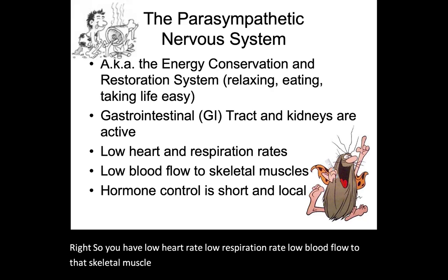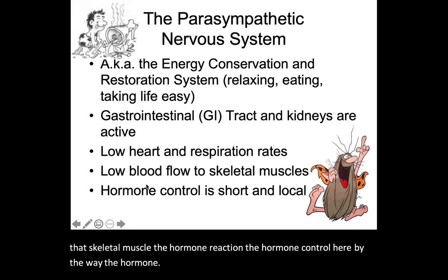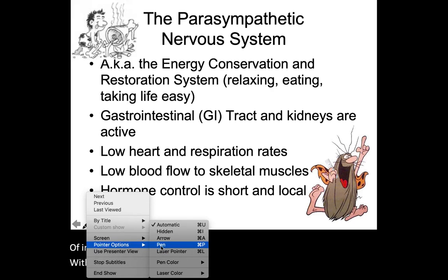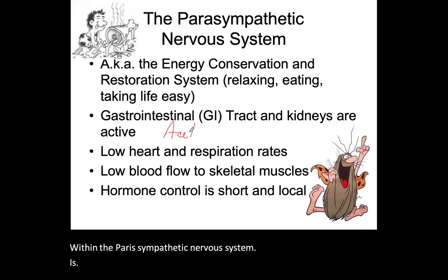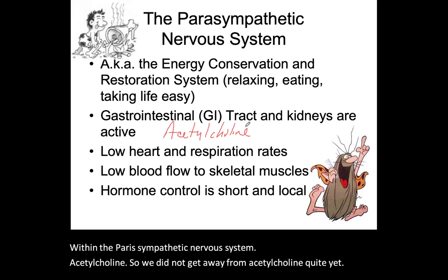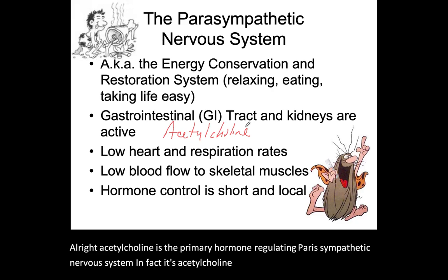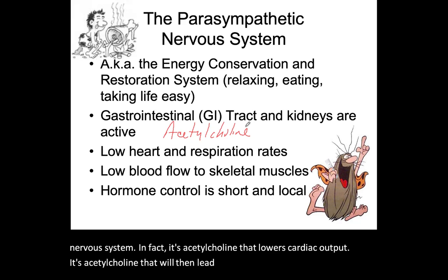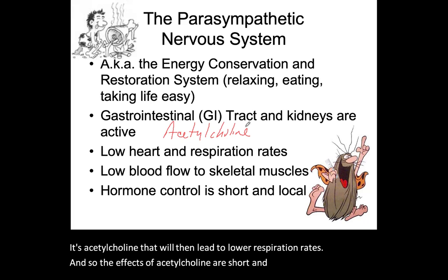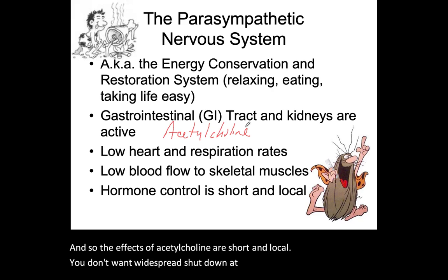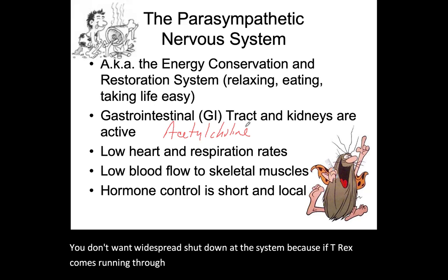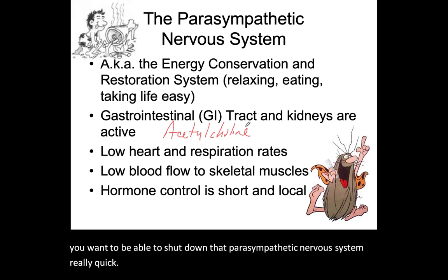When the parasympathetic nervous system is activated, your kidneys and digestive system become active to process all that food. There's not enough blood to fully support both skeletal muscle and your digestive and urinary systems, so you rest. You have low heart rate, low respiration rate, and low blood flow to skeletal muscle. The hormone of interest within the parasympathetic nervous system is acetylcholine — it's acetylcholine that lowers cardiac output and leads to lower respiration rates.